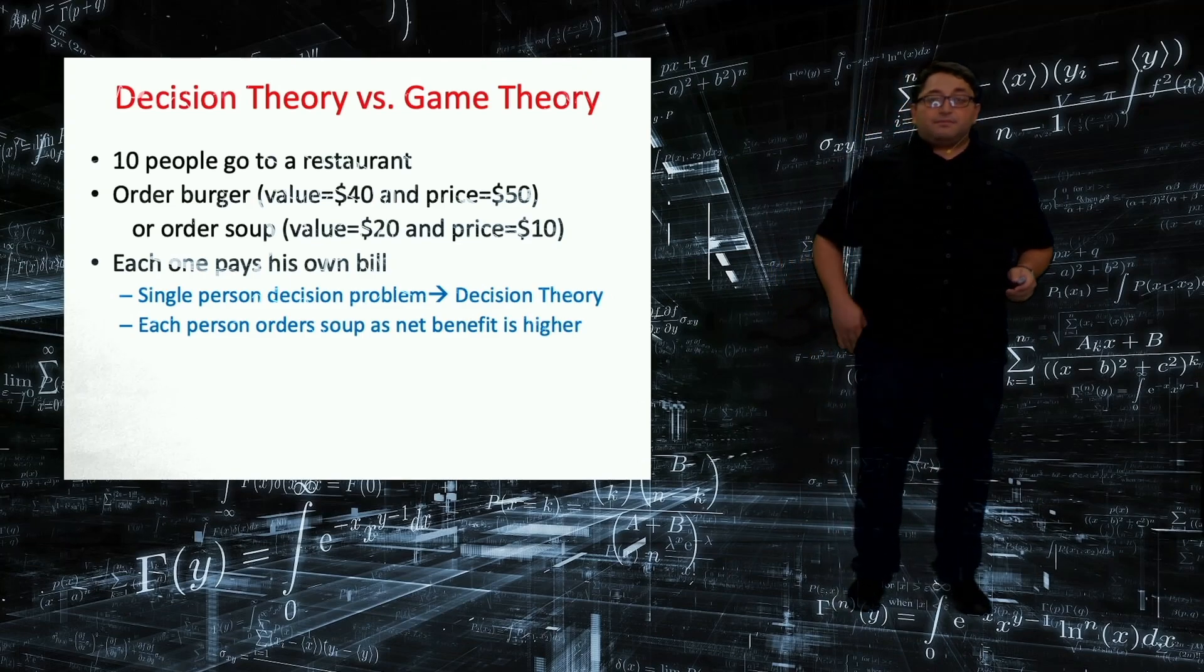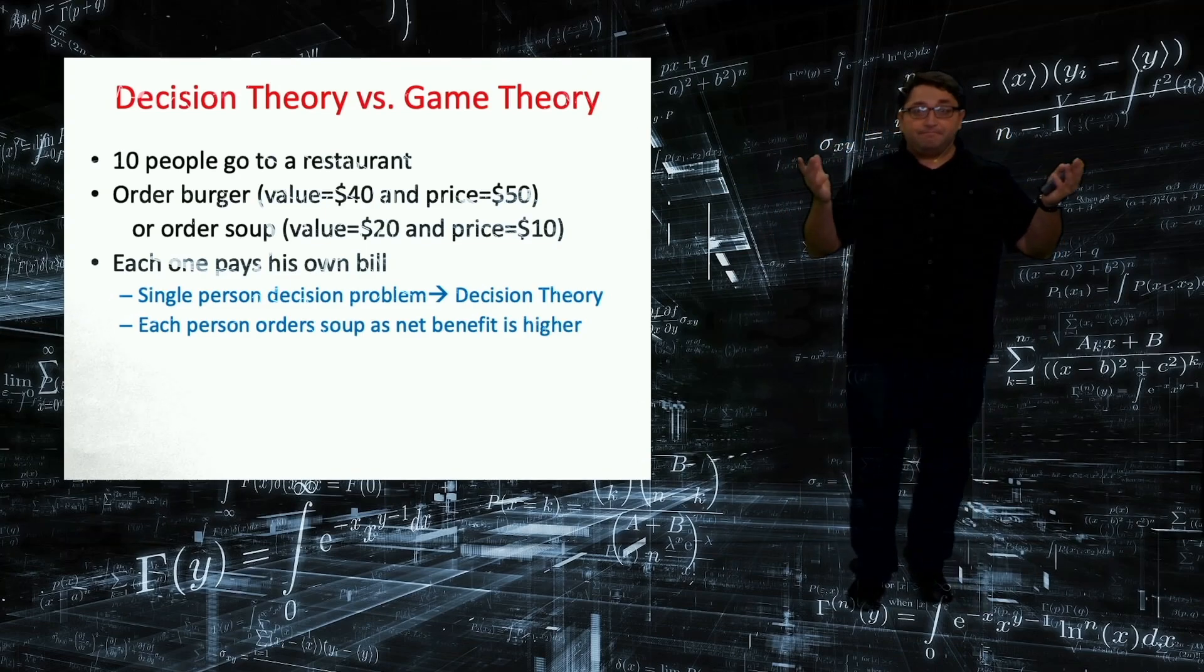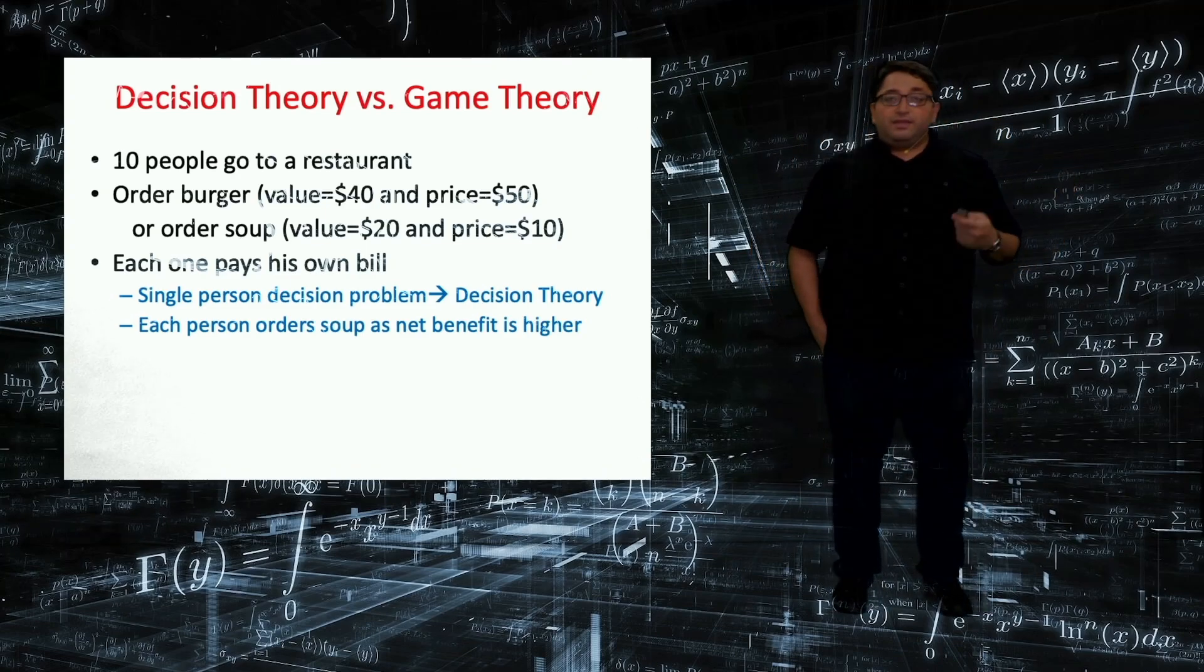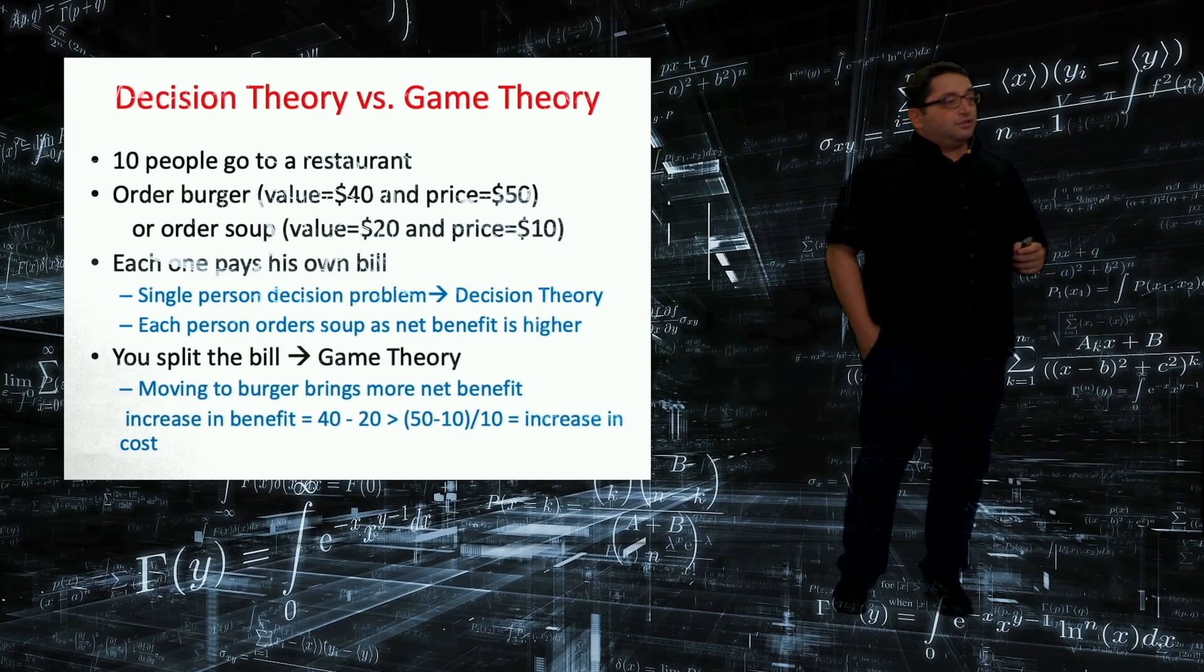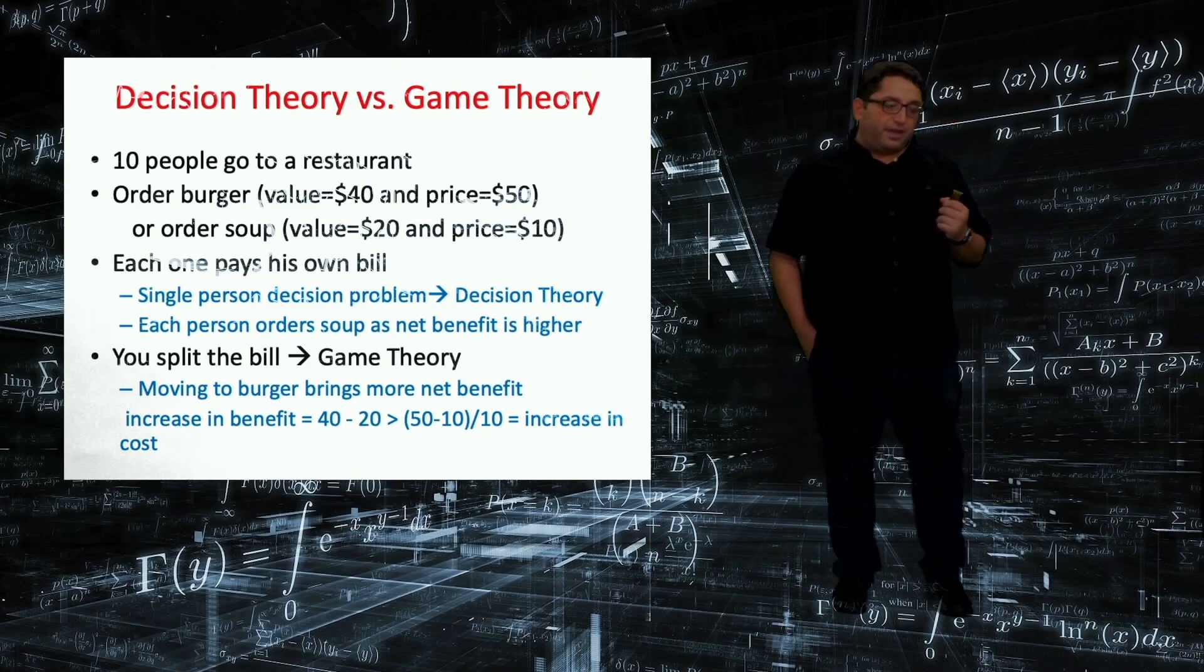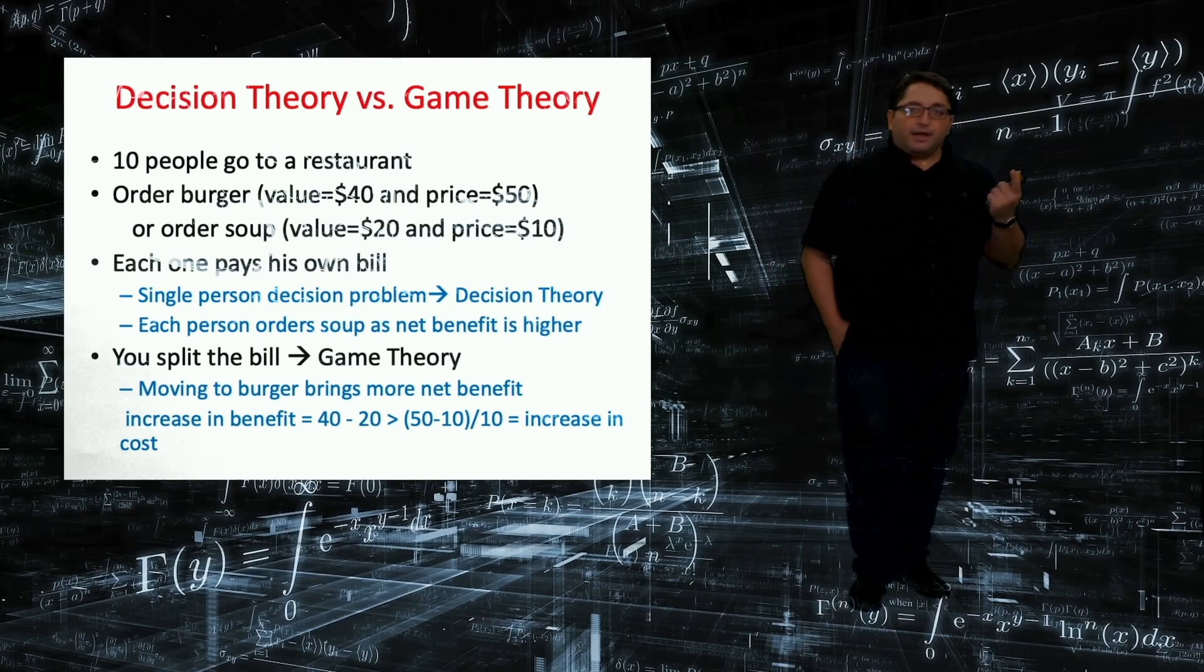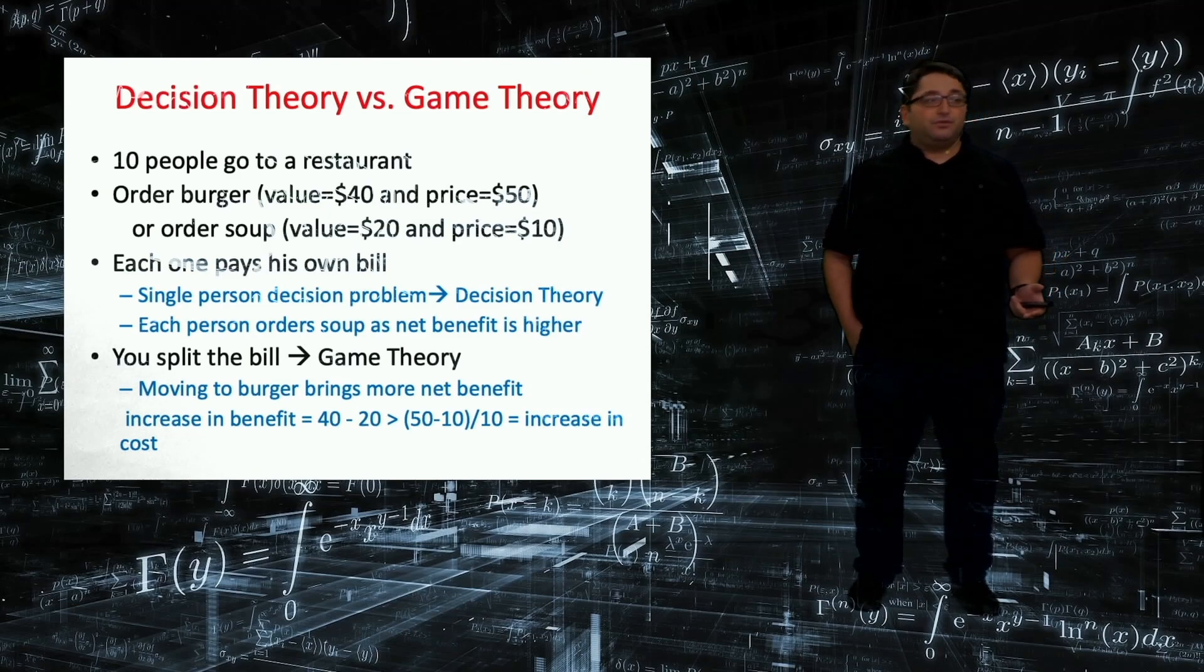So let's make this a game. How can we do that? Suppose we say that we are going to split the total bill equally. Would that change our decisions? It does. And let's see how. If I order soup as a utility maximizer, a rational decision maker, I am going to contemplate on ordering burger. What would happen if I do that?